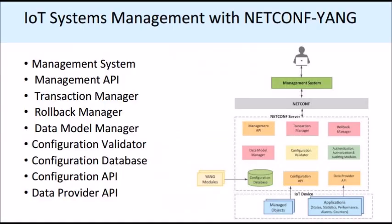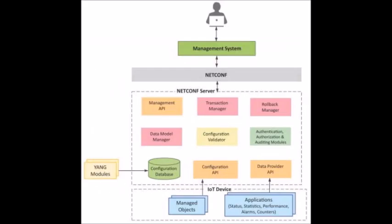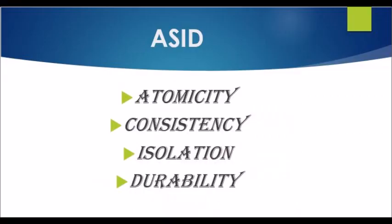Next is the Transaction layer. The Transaction manager executes all the NETCONF transactions and ensures that the Atomicity, Consistency, Isolation, and Durability — the ACID properties — hold true for all transactions. Atomicity ensures a transaction is executed either completely or not at all. Consistency ensures a transaction brings the device configuration from one valid state to another valid state. Isolation ensures that concurrent transaction executions result in the same device configuration as if transactions were executed serially. Durability ensures that a transaction once committed will persist.